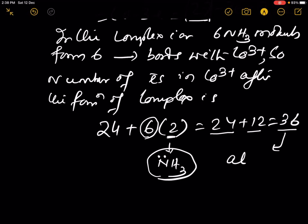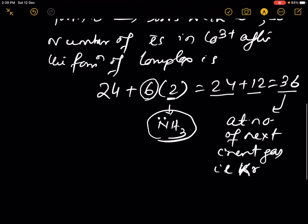That is the atomic number of the next inert gas, which is krypton. Its atomic number is 36.